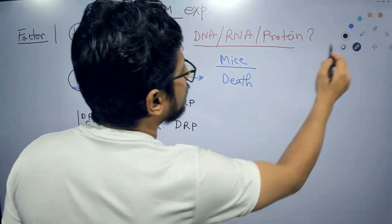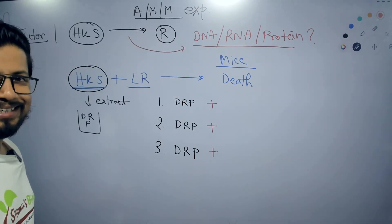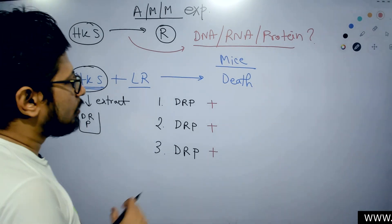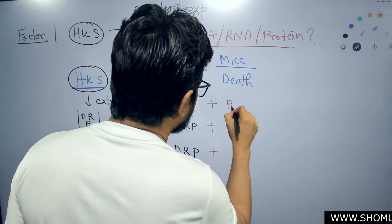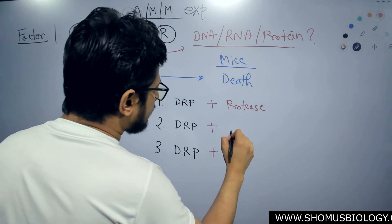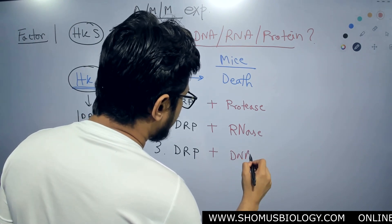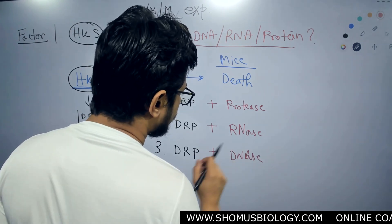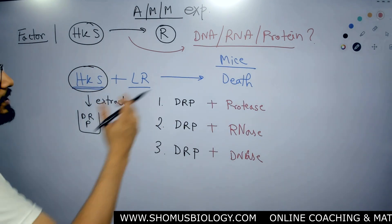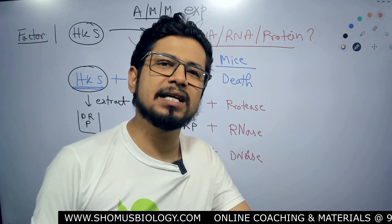In those three separate tubes, they added something to get rid of one particular component at a time. In the very first tube, they put protease. In the second, they put RNase. And in the last one, they put DNase. Protease destroys protein. RNase destroys RNA. And DNase destroys DNA — that means endonucleases and exonucleases.